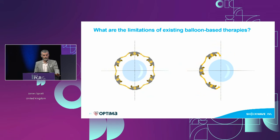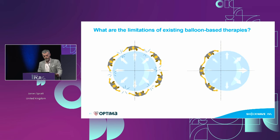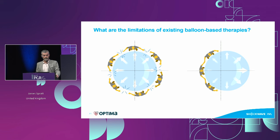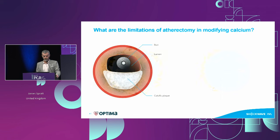Using an analogy: a group of friends holding hands around a ball in the middle — when you expand calcium concentrically, you fracture it concentrically. But with eccentric calcium, the force of the balloon is away from the resistance. So it actually makes more sense to use high-pressure balloons in concentric calcium. In eccentric calcium, there is no mechanism for their use and they actually risk safety to your patient and your procedure.